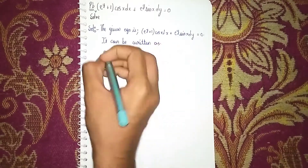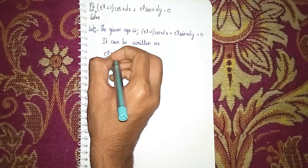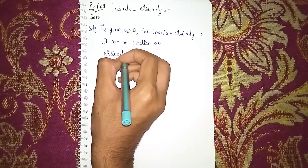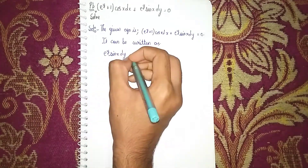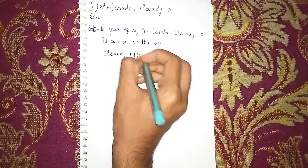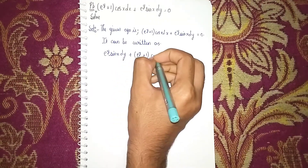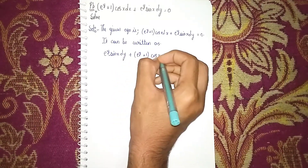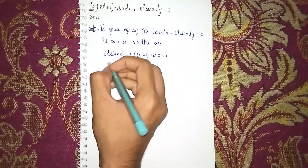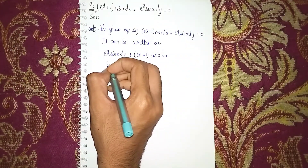We can rewrite this as: e^y · sin x · dy + e^(y+1) · cos x · dx = 0. Now we begin separating the variables.